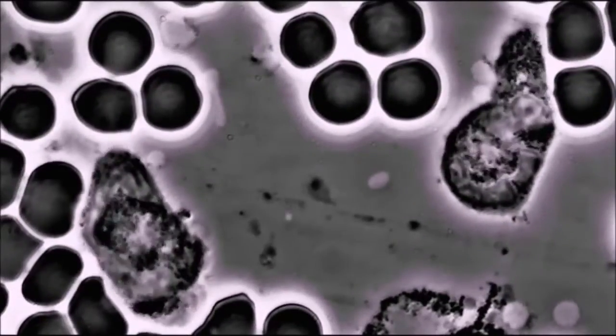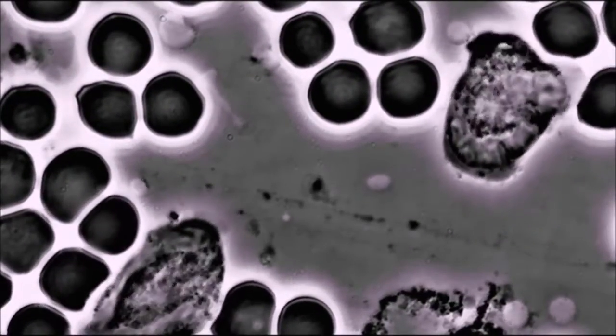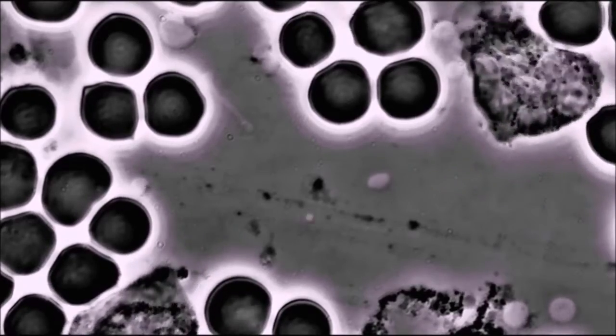The blood cells deteriorate because the blood is too acidic, giving room for fungus to evolve. Then the fungus creates an even more acidic environment.